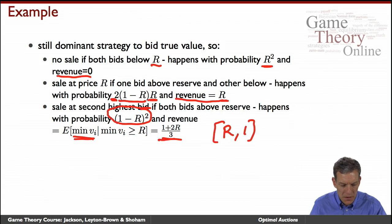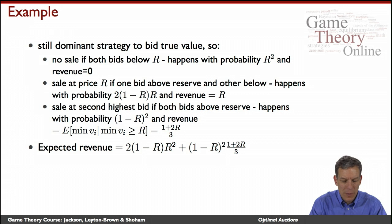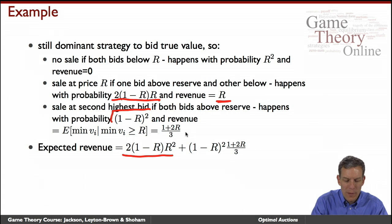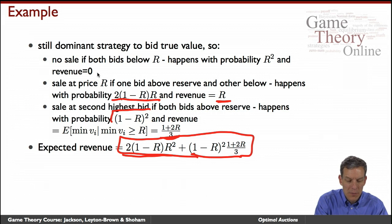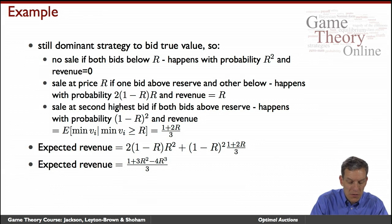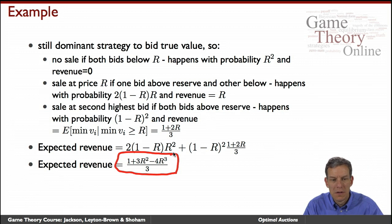Looking at the overall expected revenue: we have the probability 2R(1 − R) times revenue R giving 2R²(1 − R), plus the probability (1 − R)² times the expected revenue (1 + 2R)/3. When both are below we get nothing. Collecting terms in R, the expected revenue simplifies to: (1 + 3R² − 4R³) / 3.